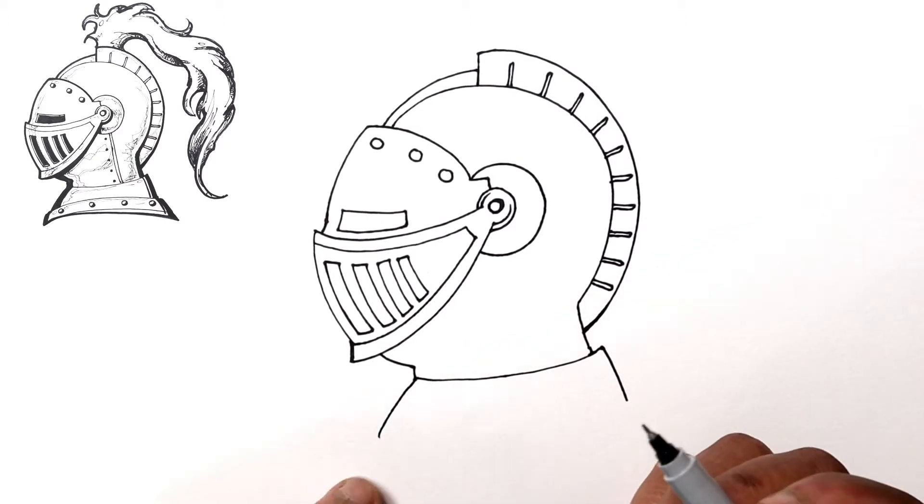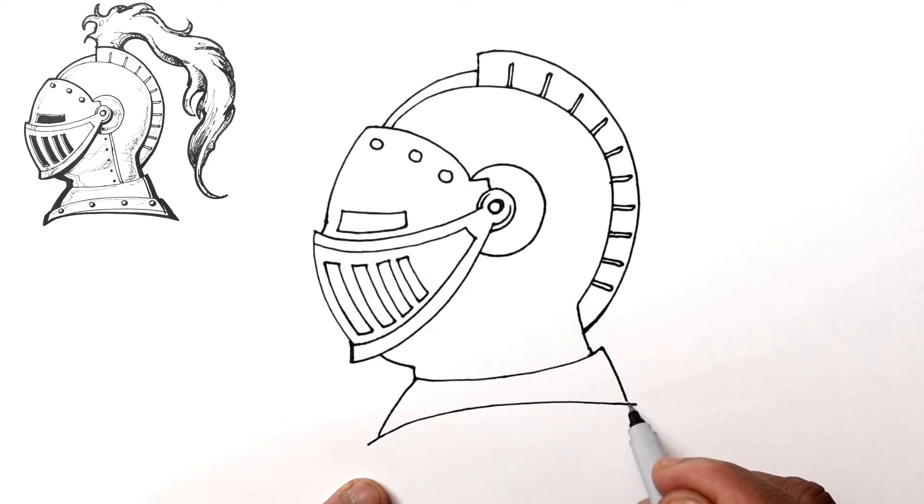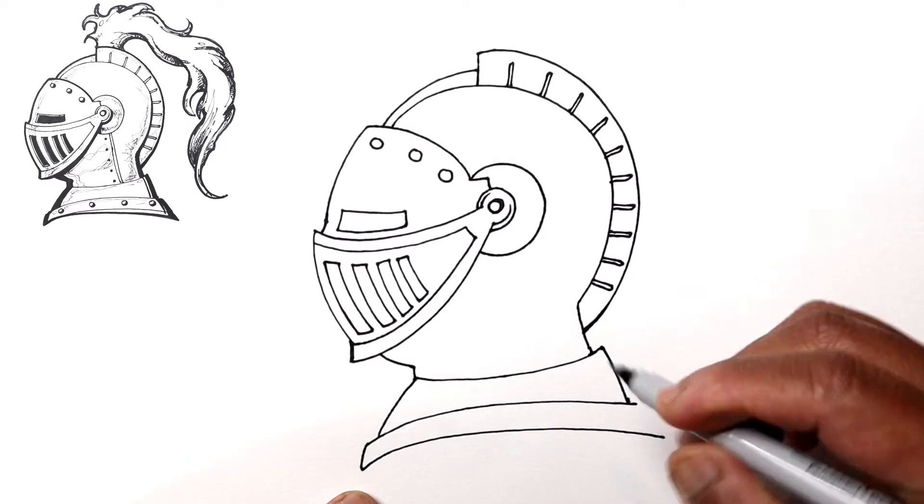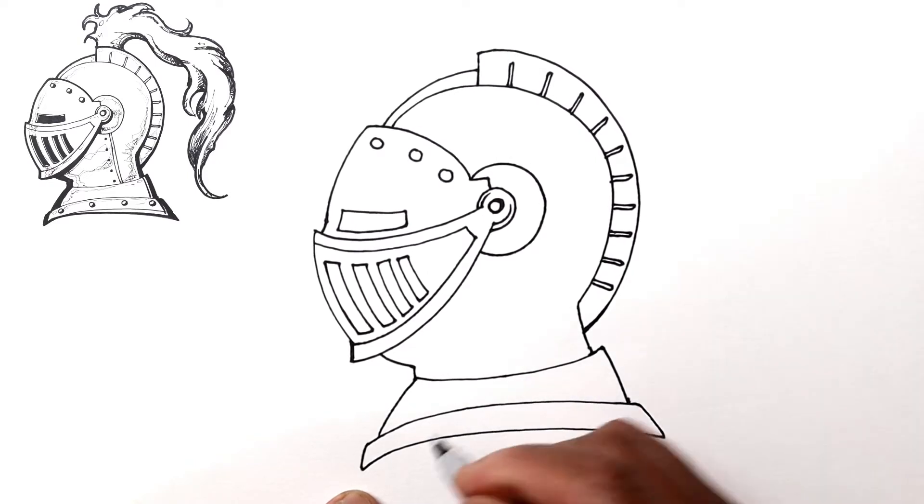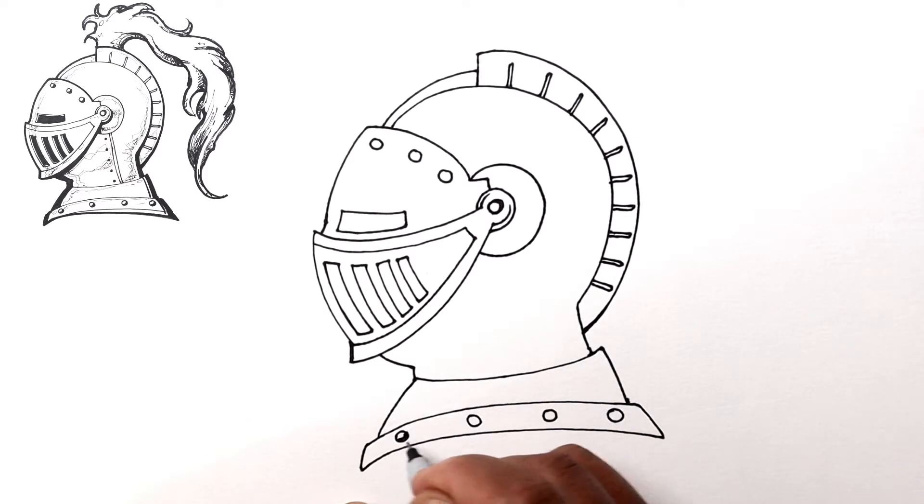Let's add a curved line that goes across to go past this back of the neck. This part here will be kind of like a guard for the shoulder, and go across. We'll add some rivet-like detail.